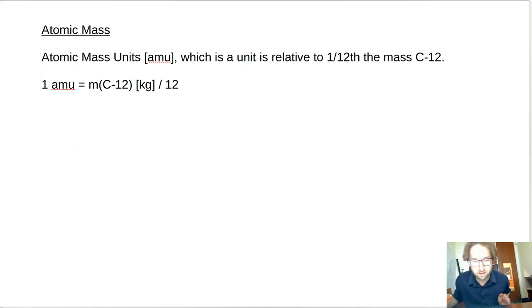So one AMU equals the mass of carbon-12 in kilograms divided by 12. Thus a reasonable approximation for the atomic mass for any nuclide then, you can say that, I'll try to do this here with the pen. Still learning in this tool.